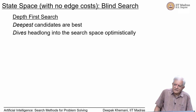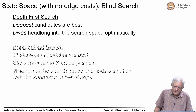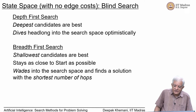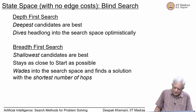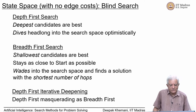Depth first search treats the deepest candidates as best, dives headlong into the search space optimistically, and does not guarantee the optimal path. Breadth first search treats the shallowest candidates as best, stays as close to the start as possible, and finds the solution with the shortest number of hops. That same strategy — staying as close as possible to the source node — is going to be applied in branch and bound state space search.